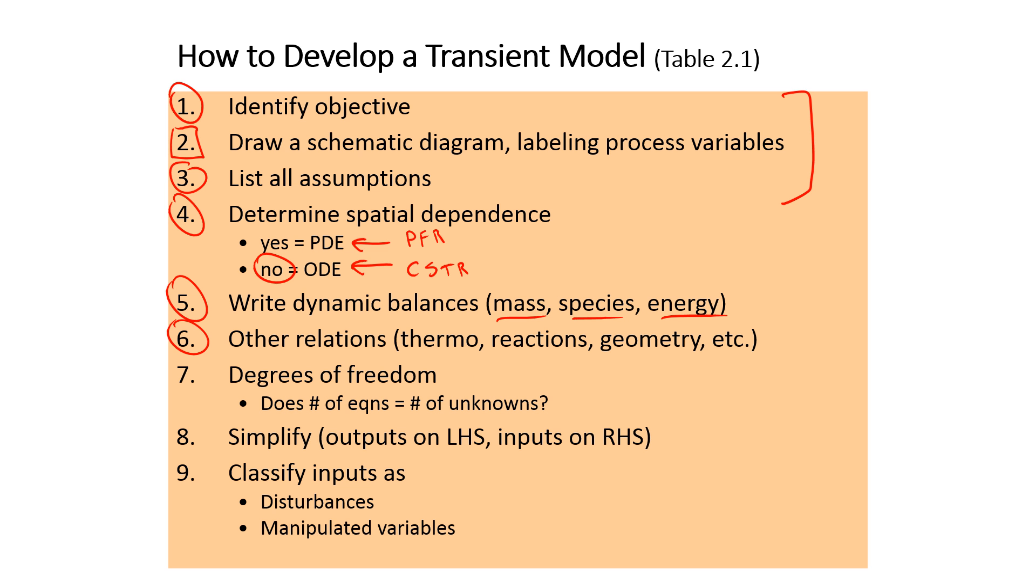The next one is you want to determine degrees of freedom. You want to make sure that you have same number of variables as equations. Now, for simulation, this is going to be important. You want the number of variables equal to the number of equations. The reason why that's important is because you're going to have the same number of unknowns as you have equations. If you have more variables, then it's underspecified.